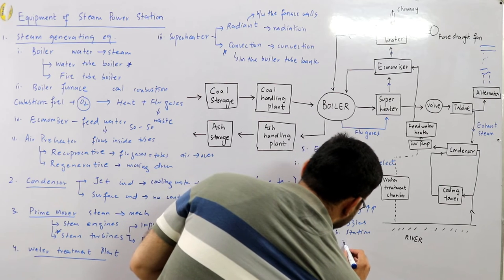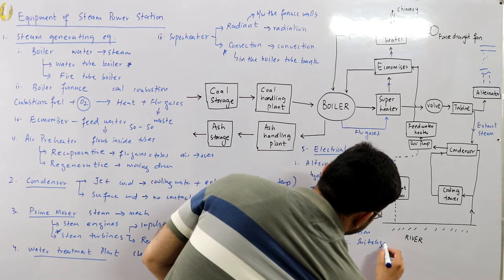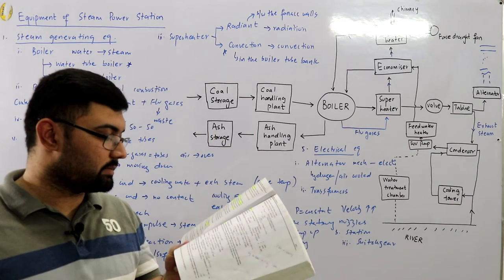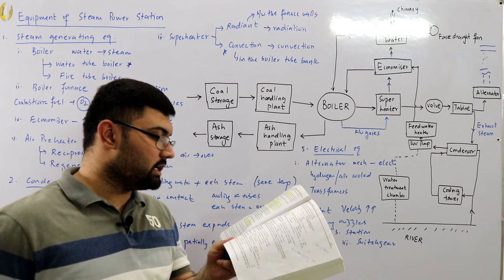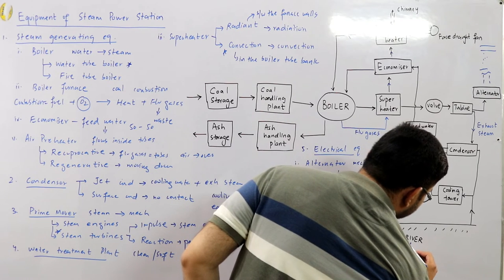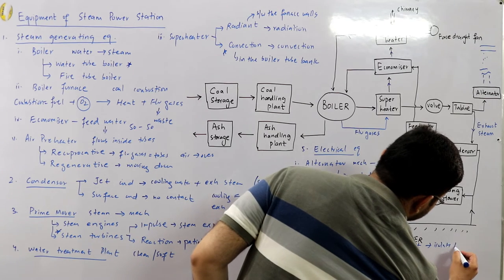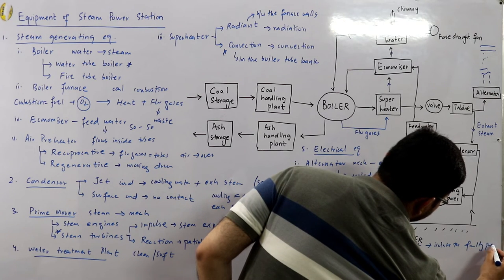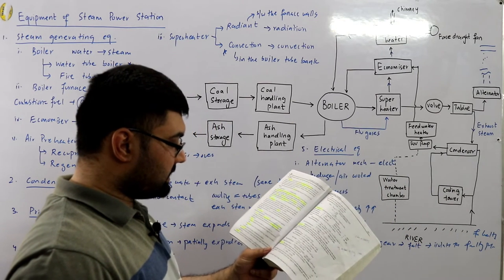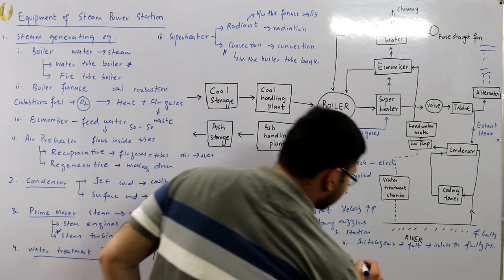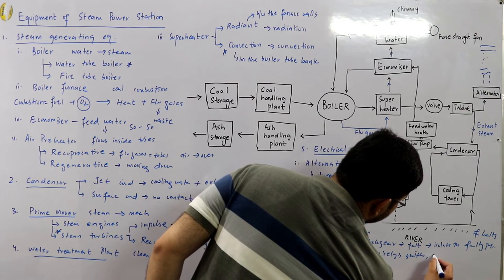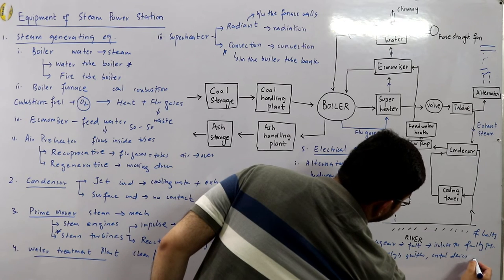Number three in electrical equipment is the switchgear. Switchgear is for protection purposes — it houses equipment which locates faults on the system and isolates the faulty part from the healthy part. The devices included are circuit breakers, relays, switches, and other control devices.